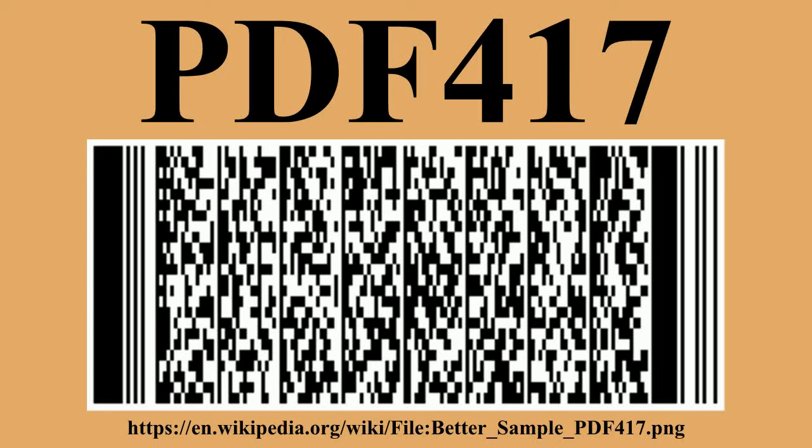Furthermore, the reader's line scan won't scan just a row — it will typically start scanning one row but then cross over to a neighbor and possibly continuing on to cross successive rows. In order to minimize the effect of these crossings, the PDF 417 modules are tall and narrow; the height is typically three times the width.